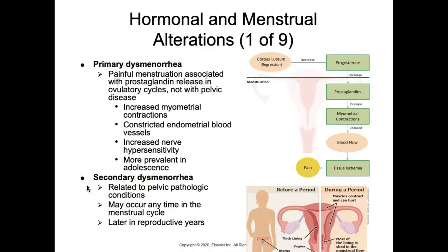Secondary dysmenorrhea is related to a pathologic condition such as endometriosis (one of the most common causes), endometritis, leiomyomas, pelvic adhesions, PID, fibroids, polyps, tumors, cysts, and IUDs. This pain may occur at any time within the menstrual cycle, and we tend to see people suffering from this type of dysmenorrhea later in their reproductive years.